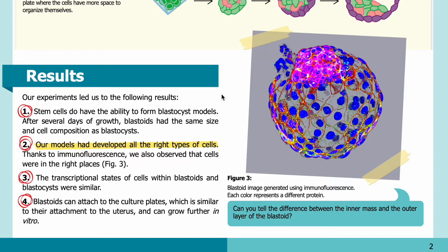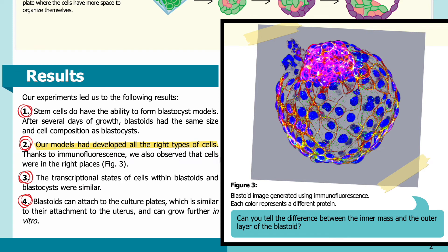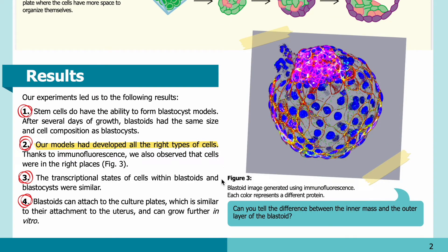Results: Our experiments led to the following results. One: stem cells do have the ability to form blastocyst models — after several days of growth, blastoids have the same size and cell composition as blastocysts. Two: our models had developed all the right types of cells; using immunofluorescence we also observed that cells were in the right places. In Figure 3, you can see a blastoid image generated using immunofluorescence, where each color represents a different protein. Three: the transcriptional states of cells within blastoids and blastocysts were similar. Four: blastoids can attach to the culture plates, similar to their attachment to the uterus, and can grow further in vitro.